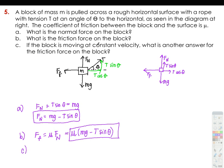Letter C: if the block is moving at a constant velocity, what is another answer for the force of friction on the block? Since we only have one vector going to the left and one vector going to the right, and it's moving at constant velocity, we can say that our force of friction is equivalent to the x-component of the tension, which is T cosine theta.